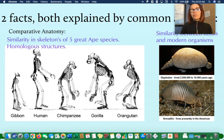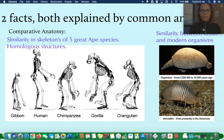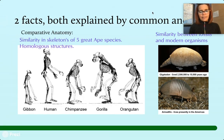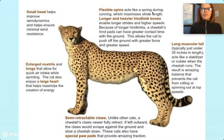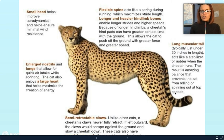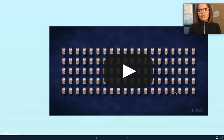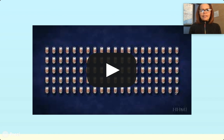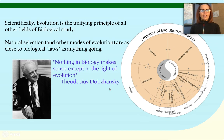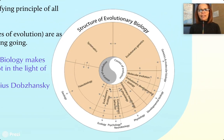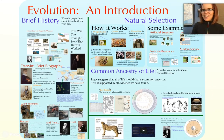Similarity between fossils and modern organisms can also be explained by common ancestry. We can use evolution to explain why organisms have certain traits. And I think we're done, everybody. Have a good rest of your day. Bye.